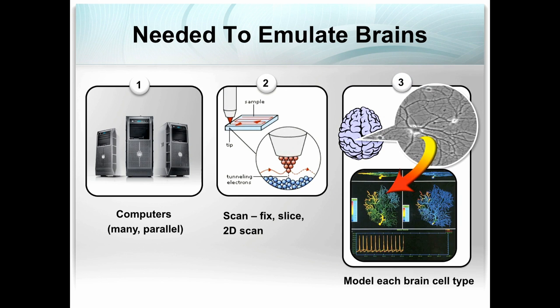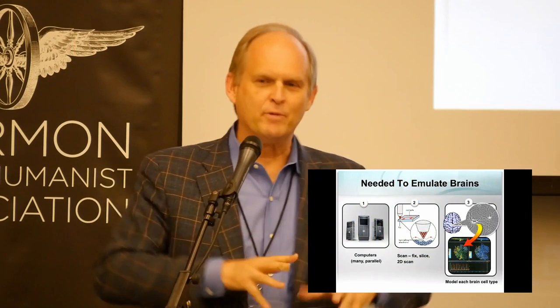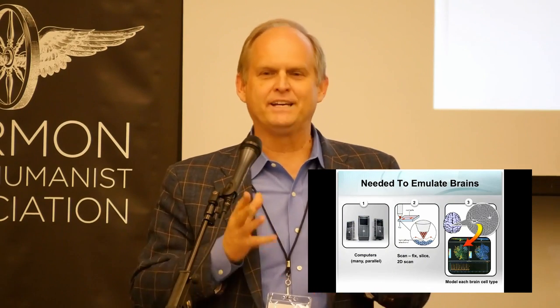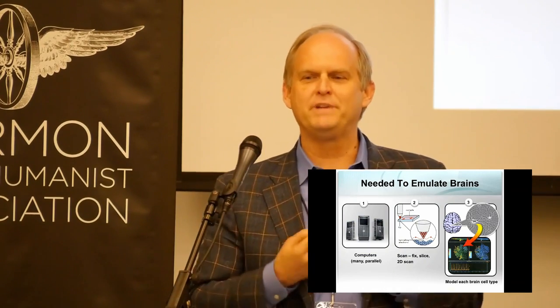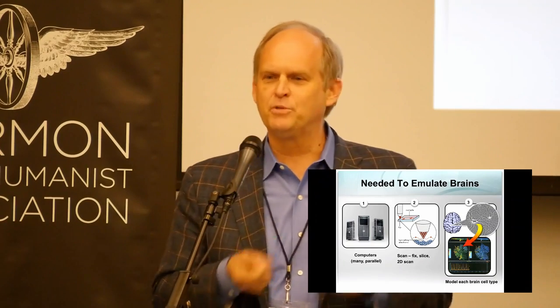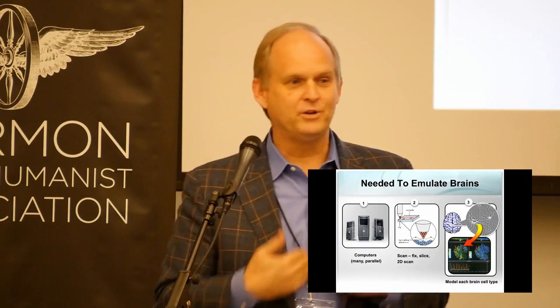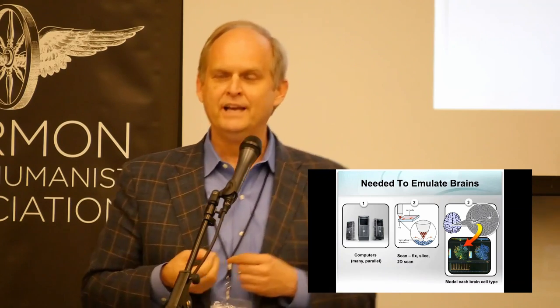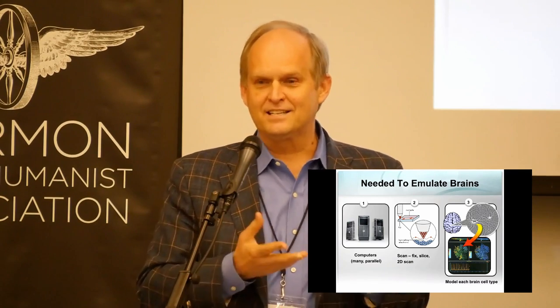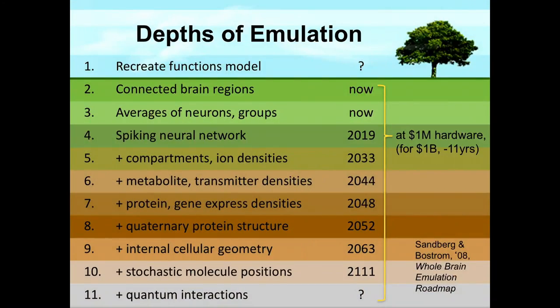If we have good enough models for all kinds of brain cells and a good enough scan of a particular brain, we can put it together to make a model of that brain with the same input-output behavior. You could hook it up with hands, eyes, ears, and mouth — talk to it, it might talk back, ask it to do things and it might do them, just like the original would. You'd have to convince it that it is the emulation, because the moment before scanning it remembered being human — so it's very human-like.